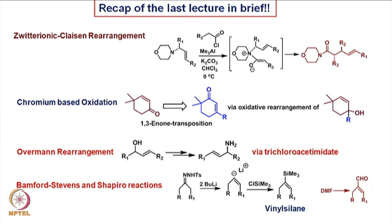We will briefly look at what we did last time. We looked at some aspects of Claisen rearrangement and their variations in terms of substrate structure. For example, the last one we took was the zwitterionic Claisen rearrangement, which was close to the ketene-based reaction.